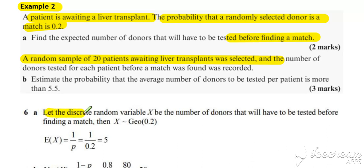For part A, we identify this as a geometric distribution with p = 0.2. We want the expected number of donors, so we want the expected value of X. E(X) = 1/p = 1/0.2 = 5.